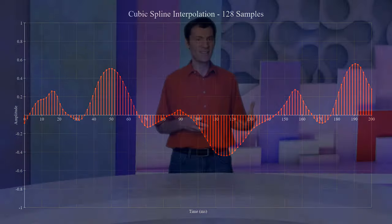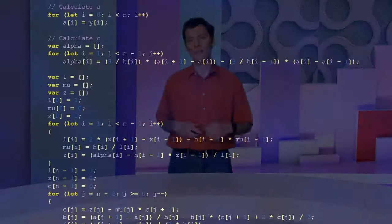However, in cases with sparse data or noisy signals, cubic splines might overfit the data, introducing artificial oscillations and potentially leading to inaccuracies in the FFT spectrum. They're also quite complex to calculate.